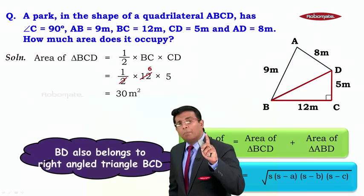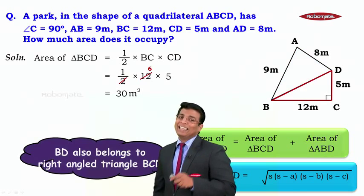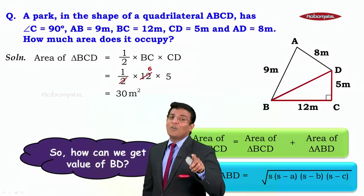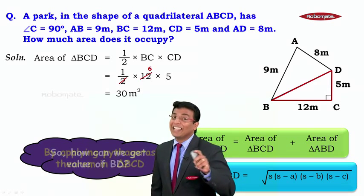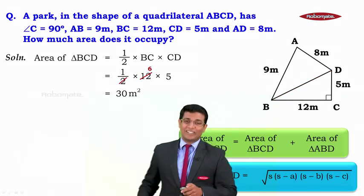If you look here, BD belongs to a right angle triangle. Which right angle triangle? BCD. So how can we get the value of BD there? We can get it by Pythagoras theorem. So let's apply Pythagoras theorem there.